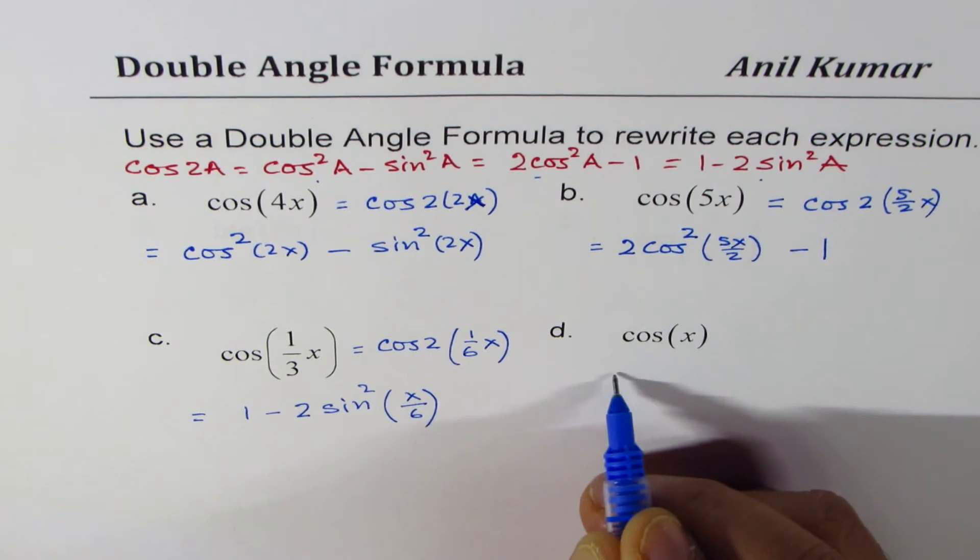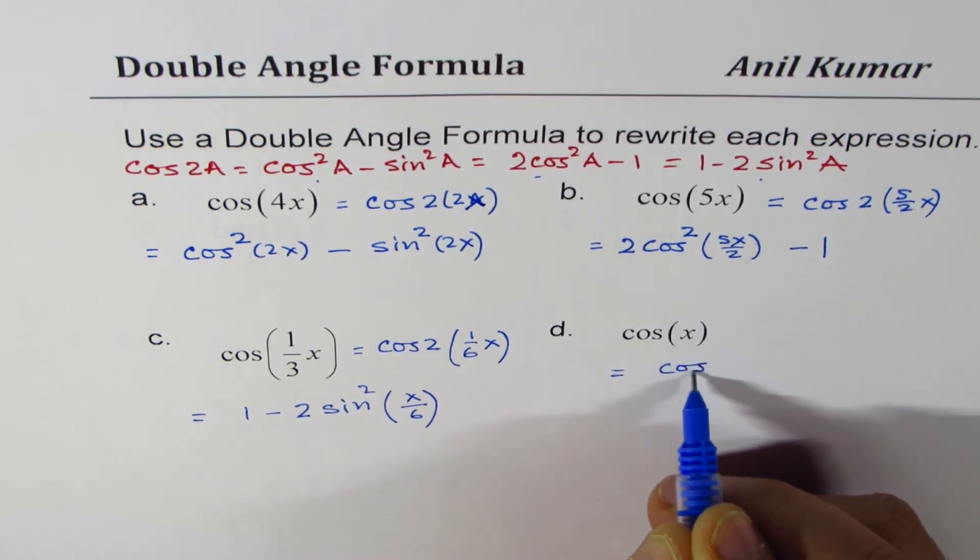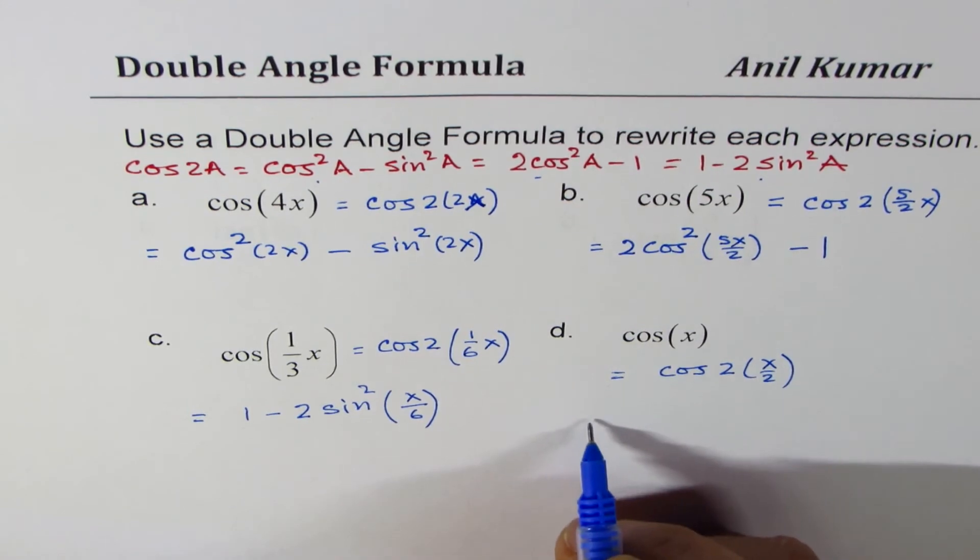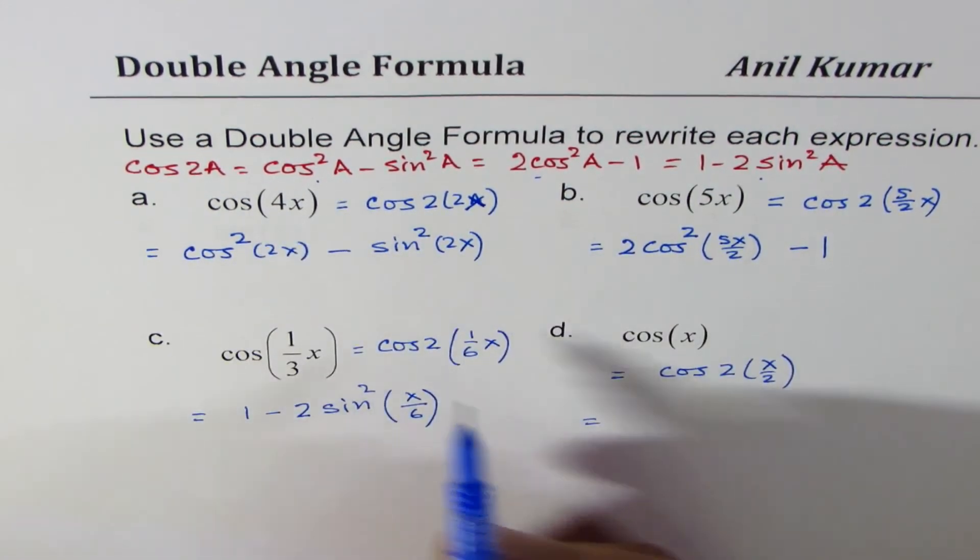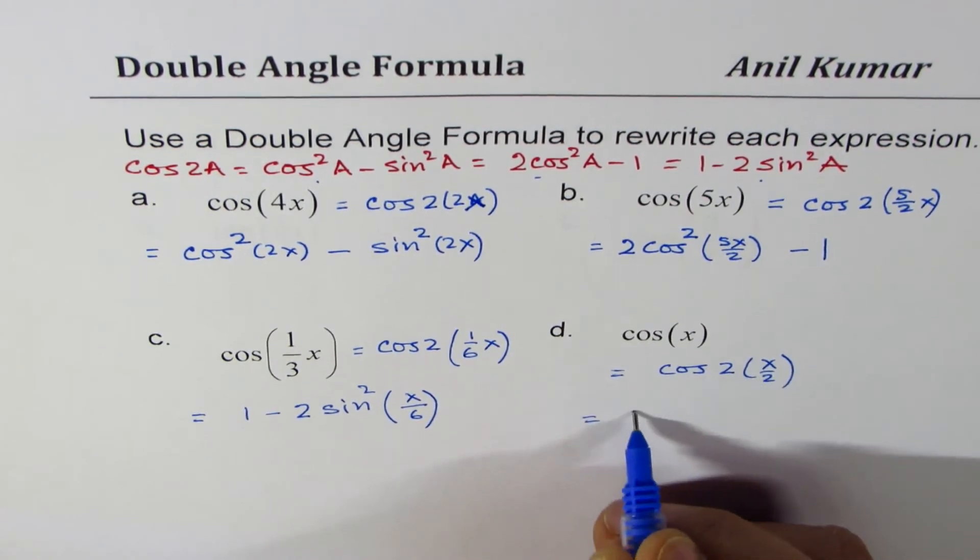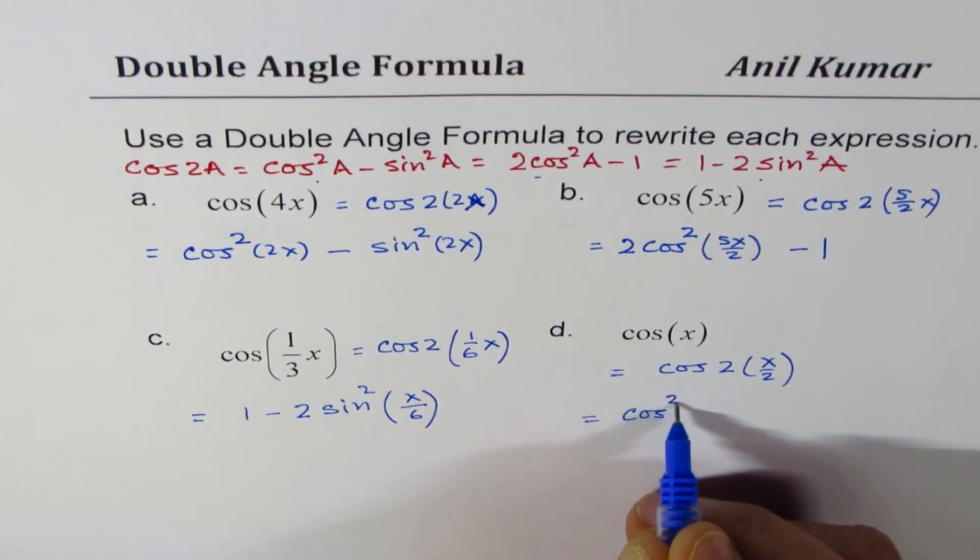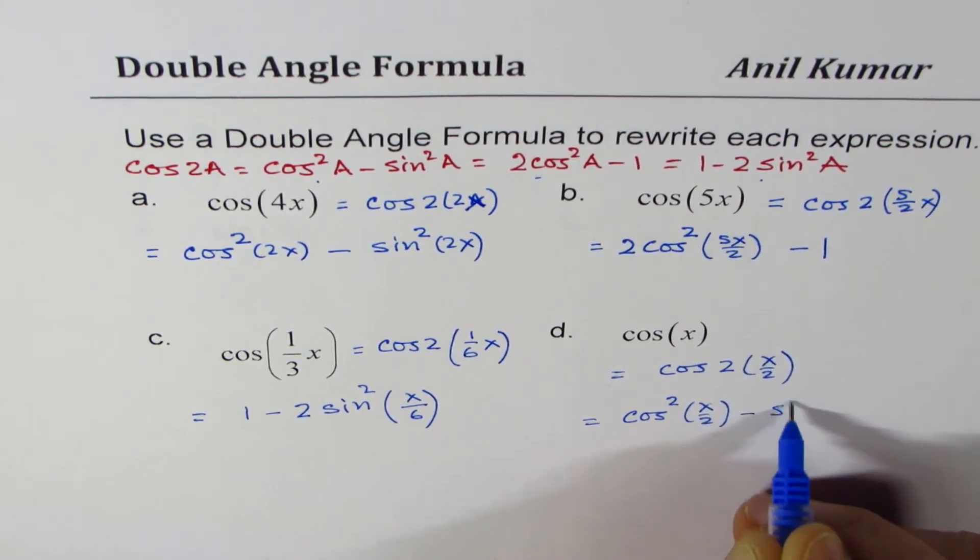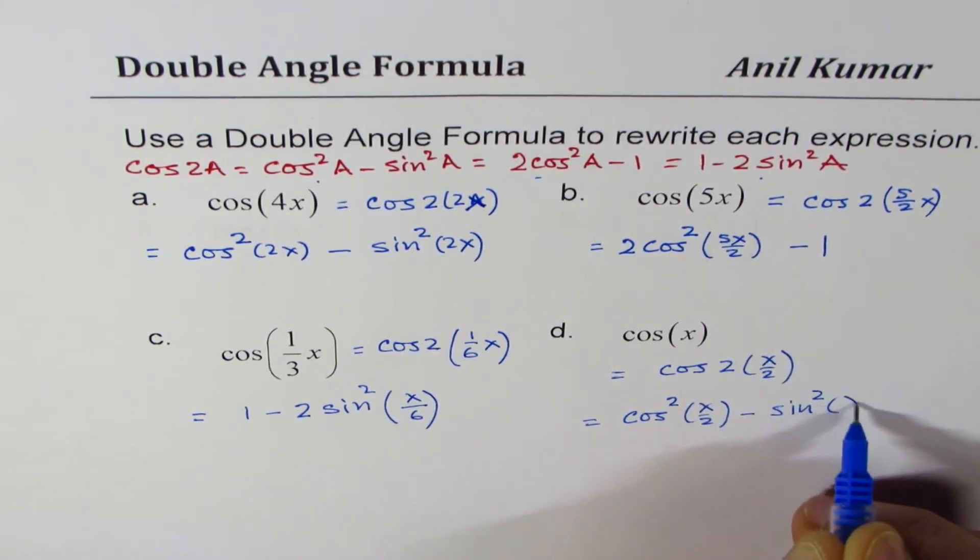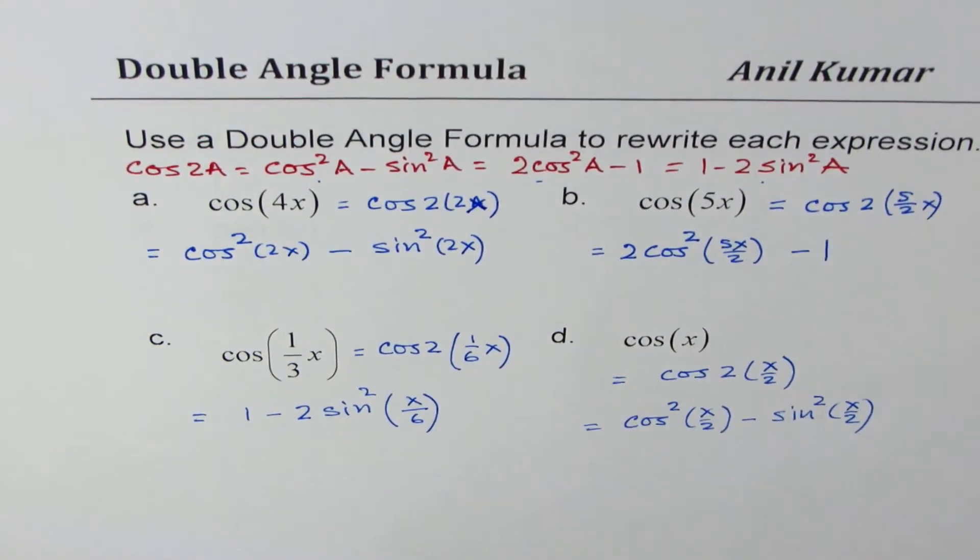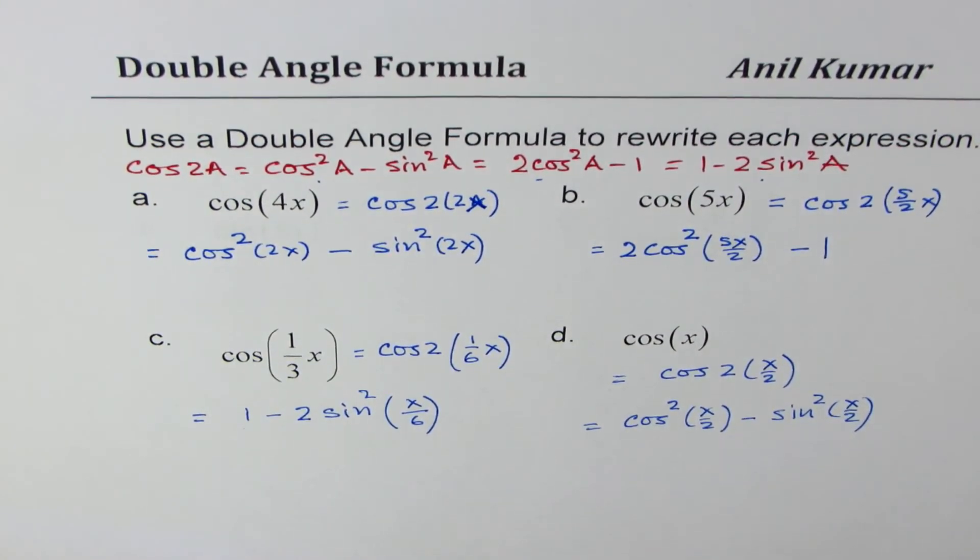cos x, I could write this as equal to cos 2 times x over 2. Let me use the very first formula again, which is cos square a minus sine square a. So, I could write this as cos square x over 2 minus sine square x over 2. So, you have seen that with cosine function, you can use any of these three formulas.